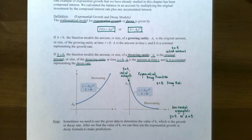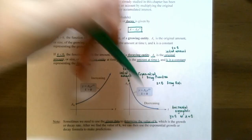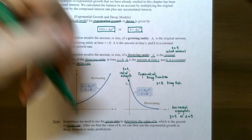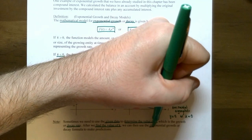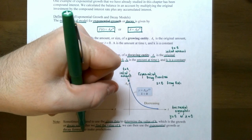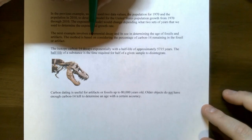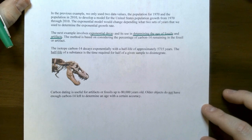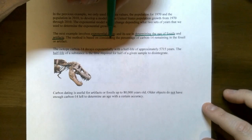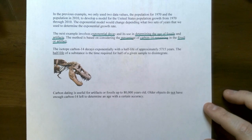Similar to the last video, we're going to take given data to determine the value of k, but this time it will be a decay rate. Once we find k, we can use the exponential decay function to make predictions. The next example looks at exponential decay for determining the age of a fossil or artifact — a process called carbon dating — where the percentage of carbon-14 remaining in a fossil can be modeled with an exponential decay function.